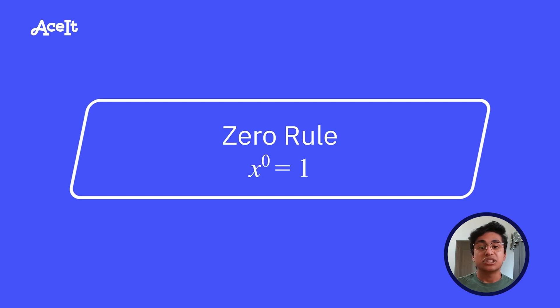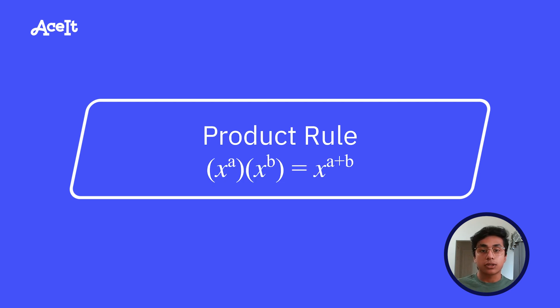The first one is the zero rule. This one's pretty easy, and it just says that anything raised to the power of zero is going to be one. So for example, we have here two raised to the power of zero. That will be equivalent to one. Next up, we have the product rule. This one states that assuming the bases are the same, if two numbers with exponents are multiplied, you're going to add their exponents together. So this example here, we have two squared times two to the third. So you're going to add the exponents together, which will give us two to the fifth power, or 32.